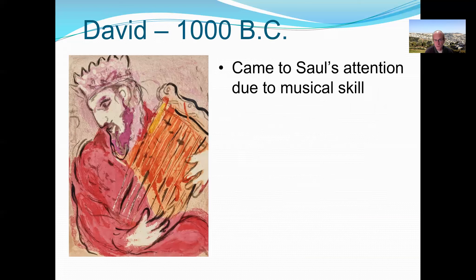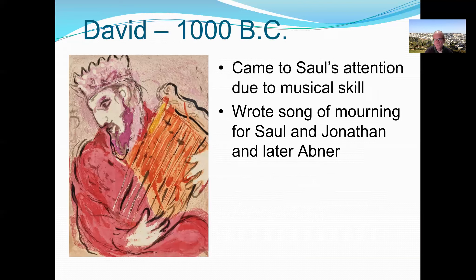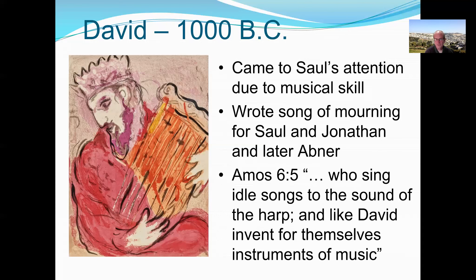David came to Saul's attention because of his musical skill. Early in his career he wrote a song of mourning for Saul and Jonathan, and later for Abner, a general in Saul's army, as recorded in Samuel. Amos 6:5, one of the earliest prophets, gives an independent witness: it criticizes those who 'sing idle songs to the sound of the harp and like David invent for themselves instruments of music' — a backhanded reference to David as a musician.